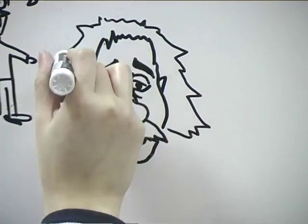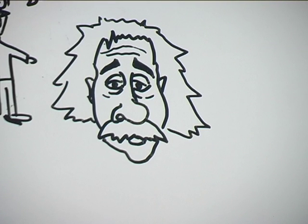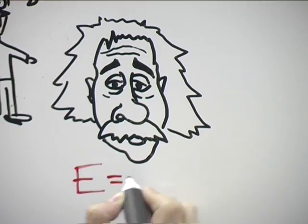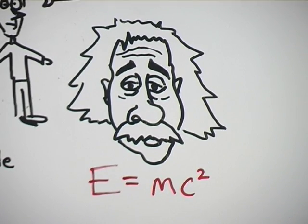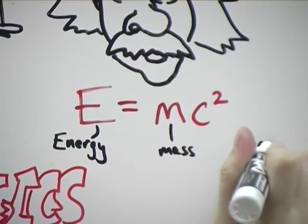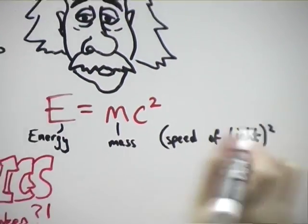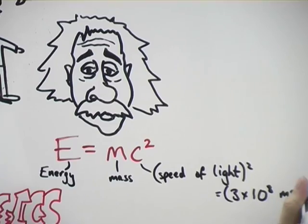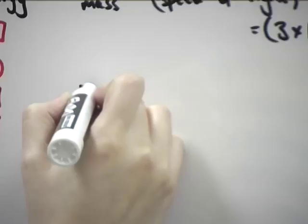He introduced probably the most famous equation of all time, E equals mc squared. The E in the equation stands for energy, m is for mass, and c is the speed of light. This equation tells us that the difference in mass between the four protons and the end helium nucleus is converted into energy and released.